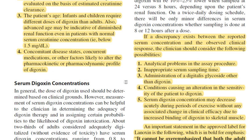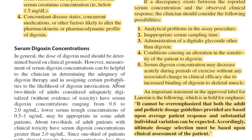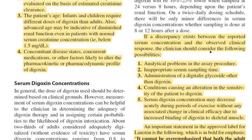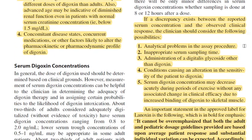Many concurrent medications interact with digoxin. For example, antacids reduce the absorption of digoxin, and thyroxine competes with digoxin for absorption. These concurrent medications and other factors that alter the pharmacokinetic and pharmacodynamic profile of digoxin must be considered to achieve proper therapeutic drug monitoring.